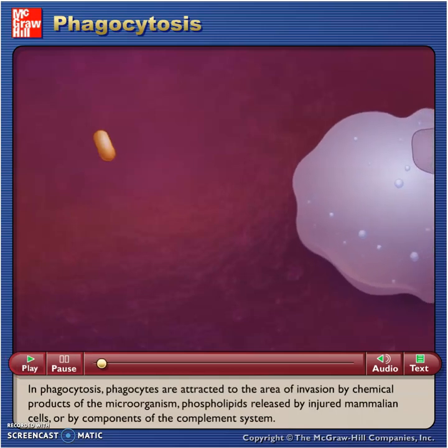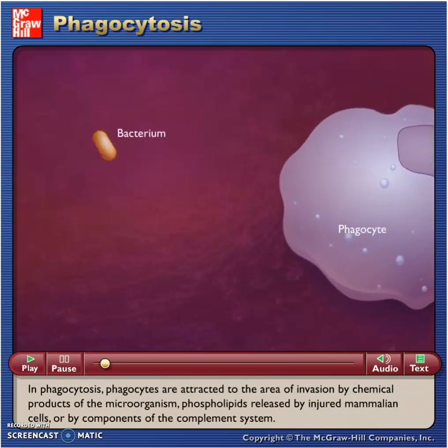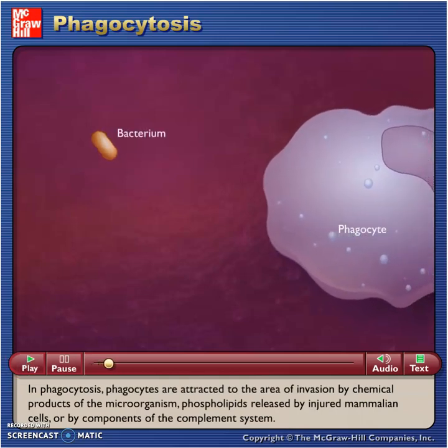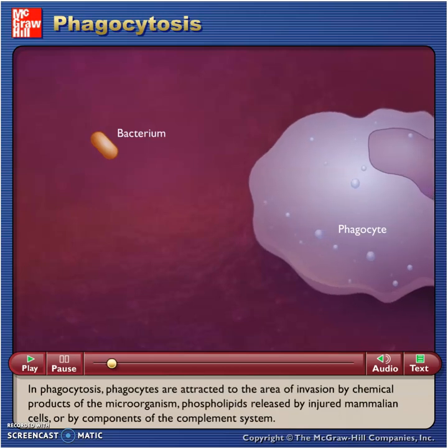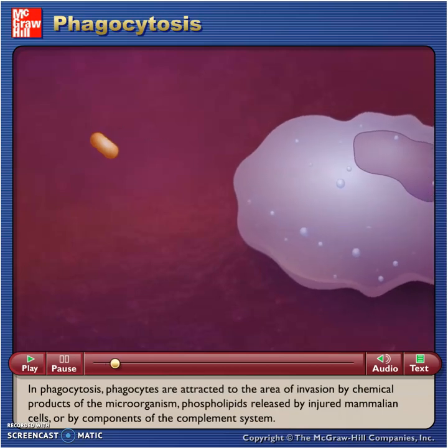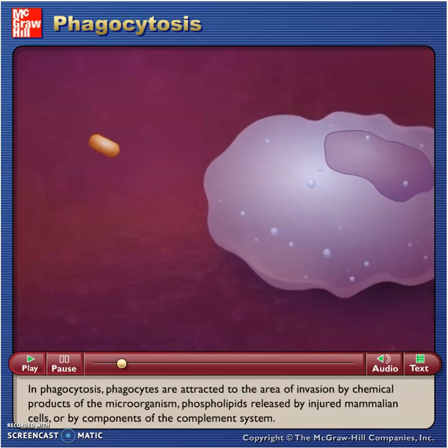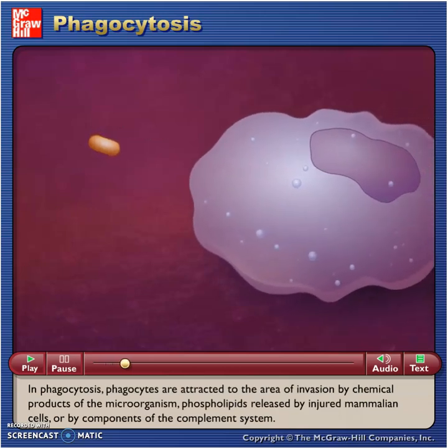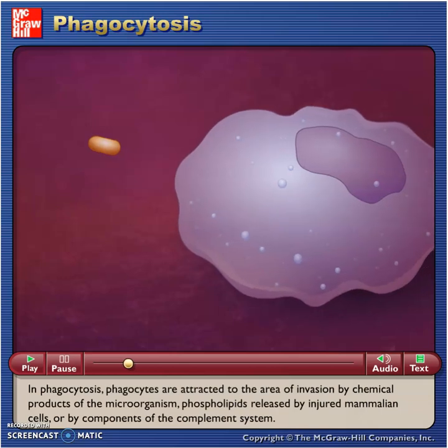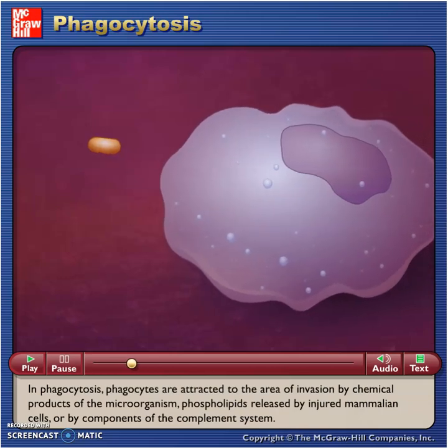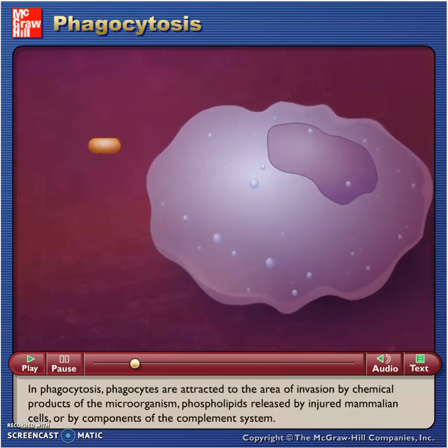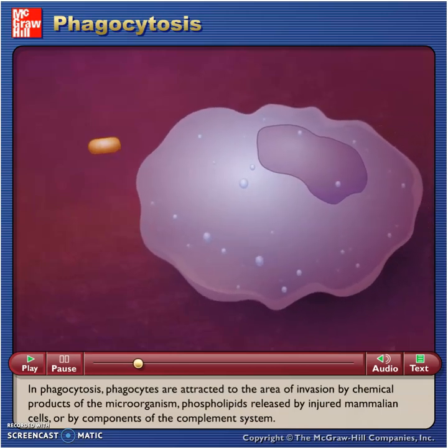In phagocytosis, phagocytes are attracted to the area of invasion by chemical products of the microorganism, phospholipids released by injured mammalian cells, or by components of the complement system.